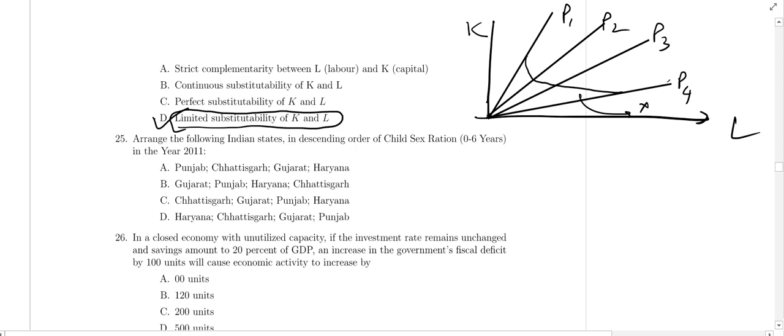Question 25: Arrange the Indian states according to child sex ratio 0-6 years. Using 2011 data, Punjab has 909, Chandigarh has 890, Haryana has 834. According to this data, the answer is A.